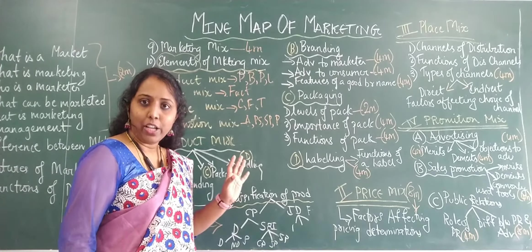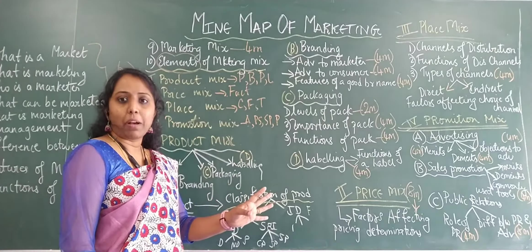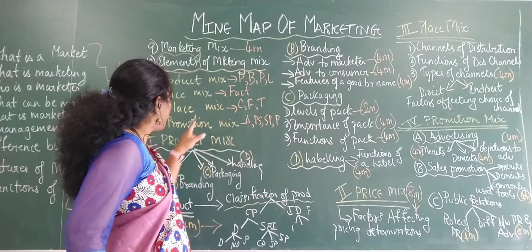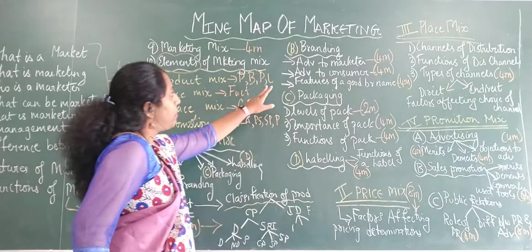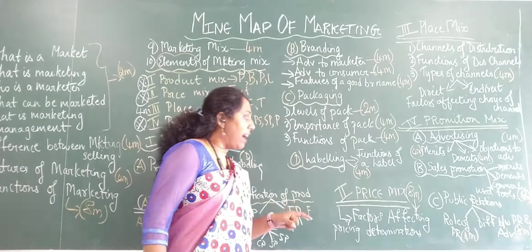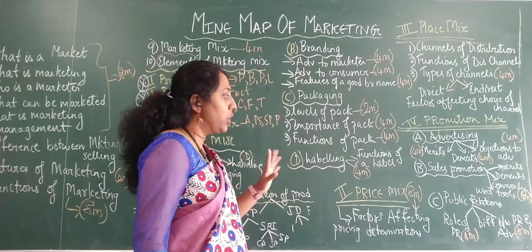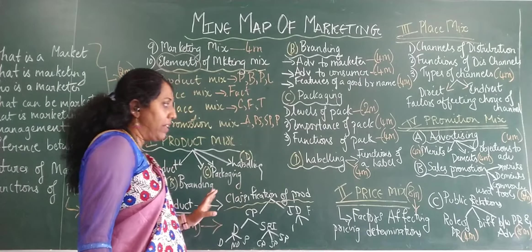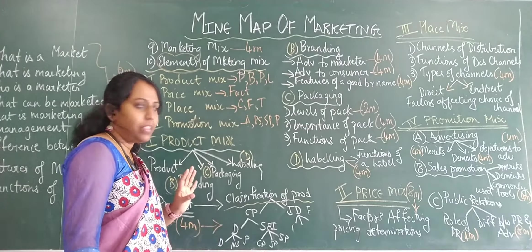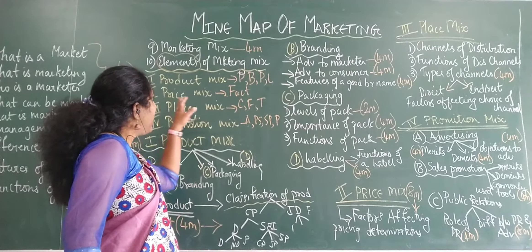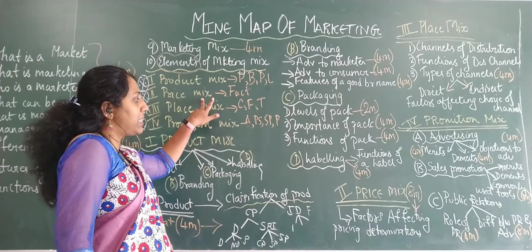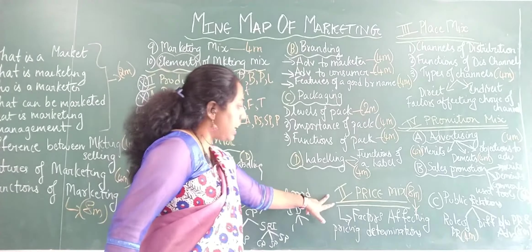The fourth one under product mix is labeling. Under labeling, you have functions of a good label or functions of a label — that is the only topic under labeling, for a four marker. Now we've covered product mix. The second element is price mix, written in yellow chalk on the board under elements of marketing mix.